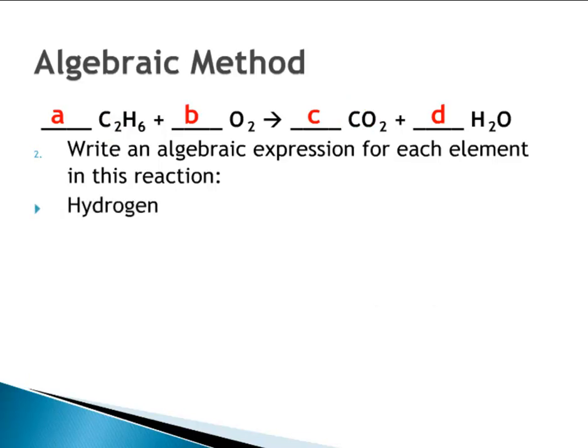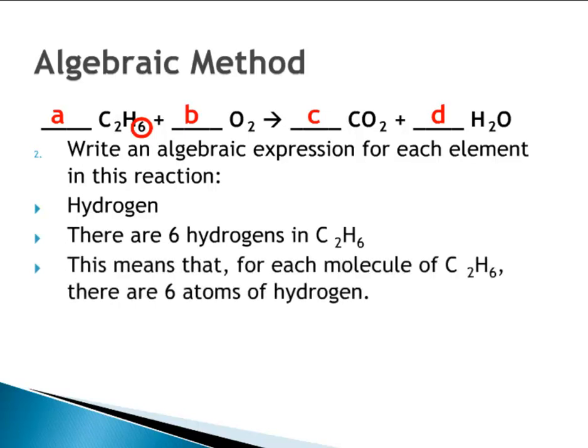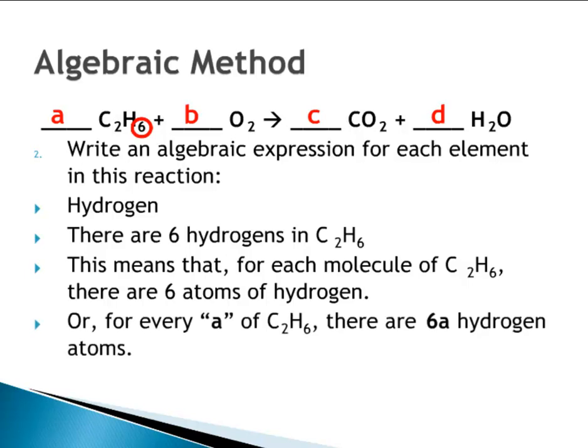Looking at hydrogen, we notice there are six hydrogens in C2H6. This means that for each molecule of C2H6, there are six atoms of hydrogen. Or for every A of C2H6, there are six A hydrogen atoms. If the coefficient were one, we'd have six hydrogen atoms; if it were two, we'd have twelve hydrogen atoms.